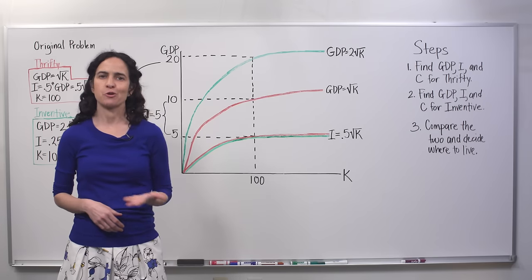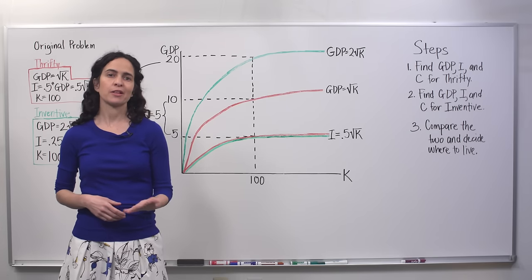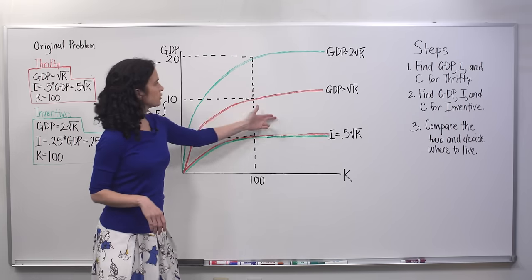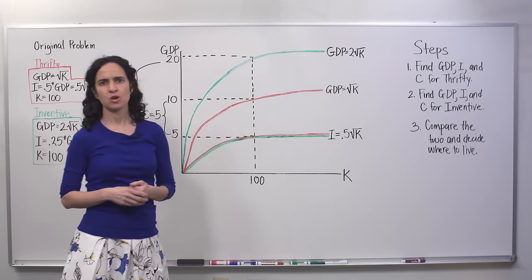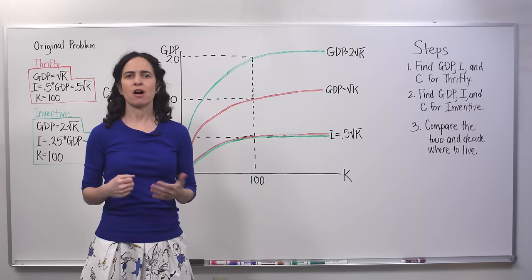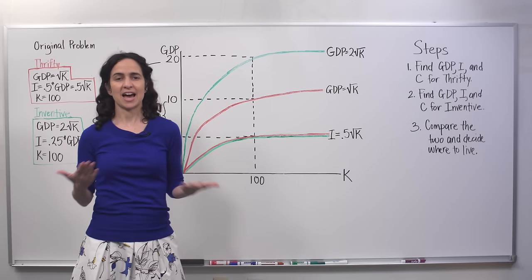Now, if we were in a normal classroom right now, this is probably the time when you would raise your hand and say something like, this looks great, but what about these two countries and their steady states? What if Thrifty, because of all of their saving, will be far better off than Inventive in another, I don't know, say 10 years?